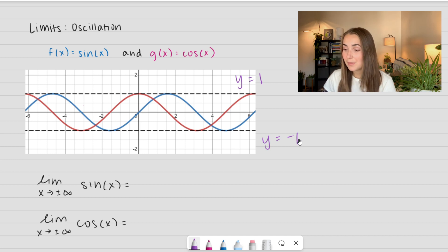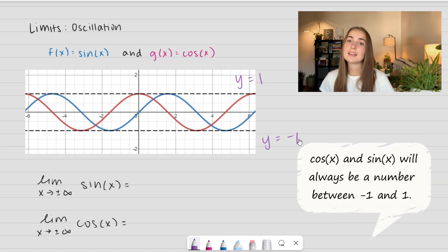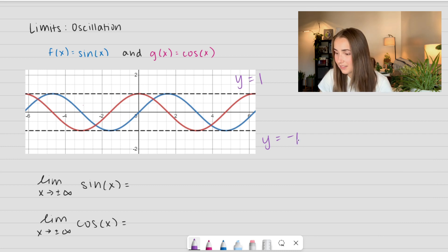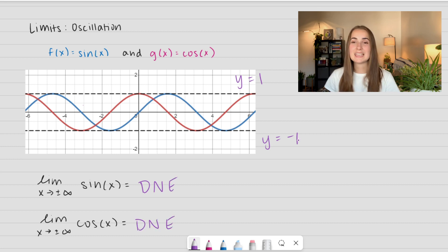So if we take the limit as x approaches positive or negative infinity of cosine of x or sine of x, we're not going to get an actual value because it's oscillating forever. It is continuously changing values. So we write this as these limits do not exist. Because we can't be equal to a million numbers at the same time. We can only be one number. So when it's oscillating, the limit does not exist.